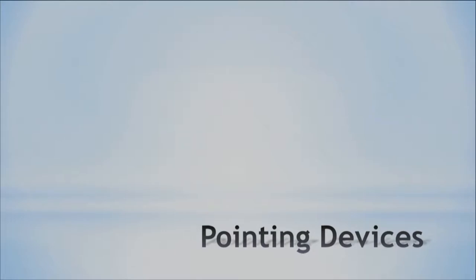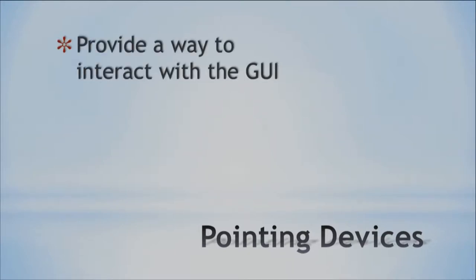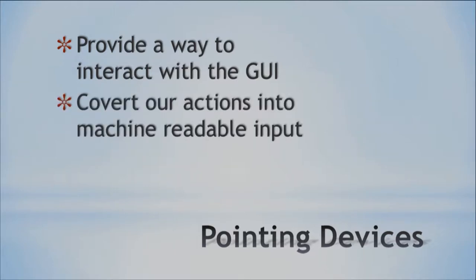Pointing devices are a really important part of our computers these days, because they provide us with a way to interact with our GUI — our graphical user interface. The mice actually take and convert our actions into machine-readable input. So our actions with the mouse, the machine understands and interprets them and makes it so the system understands what we're wanting to do. They're a very important part of our computer system. So let's jump in and look at some different types that we have.